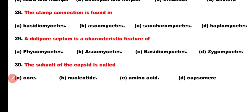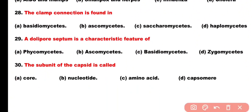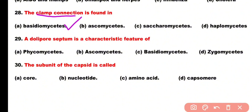Question number 28: Clamp connection is found in: Basidiomycetes, Ascomycetes, Sacromycetes, or Haplomycetes. Correct answer is option A. Clamp connection is a hook-like structure present in Basidiomycetes fungi, found in the growing hyphae.